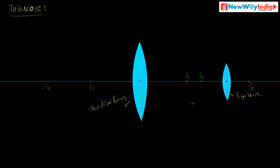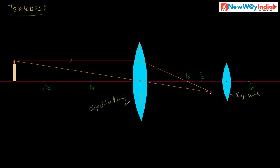Now, how is the image formed? Let us place an object beyond the center of curvature of the objective lens. The rays pass like this — one ray is parallel to the principal axis and is incident on the convex lens, that is the objective lens. After refraction, it passes through the principal focus of the objective lens. Another ray passes through the optical center of the objective lens. These two rays meet at a point where the image is formed. This image is real and inverted.